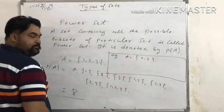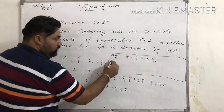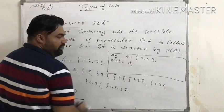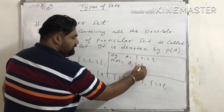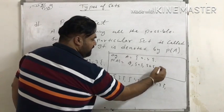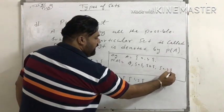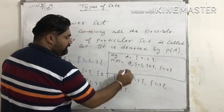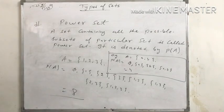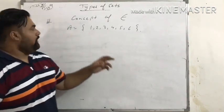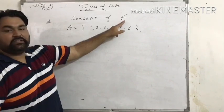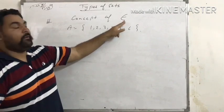Another example: if A equals {a, b}, then the power set contains the empty set, single elements {a} and {b}, and then {a, b}. So the number of subsets is 4. The next concept is the sign of 'belongs to' (∈).